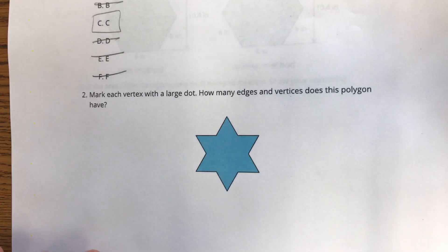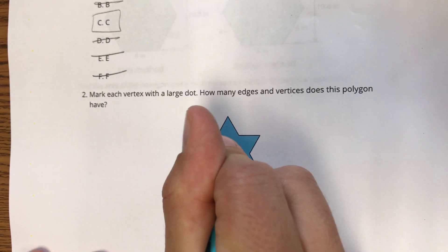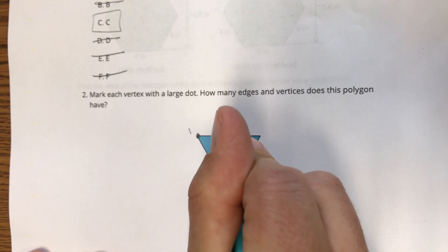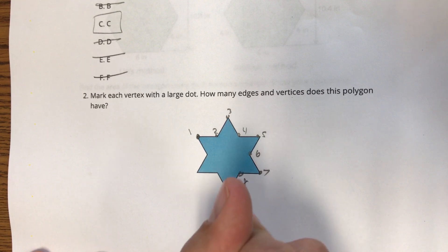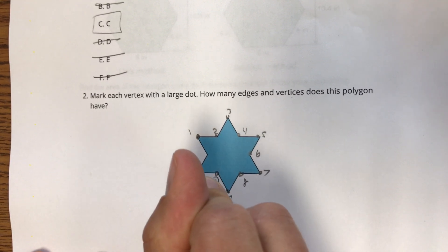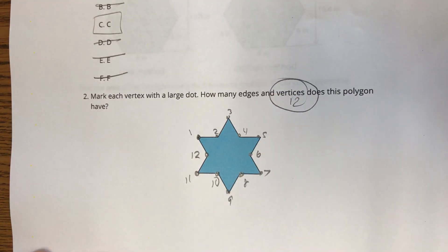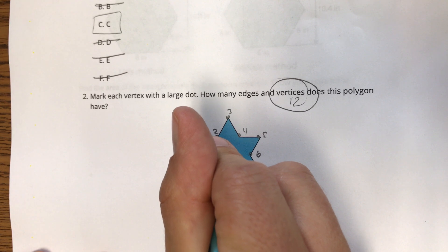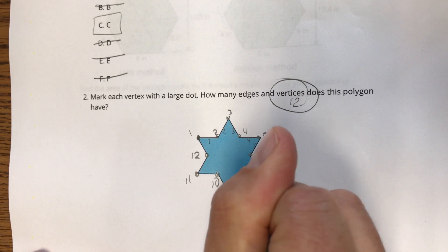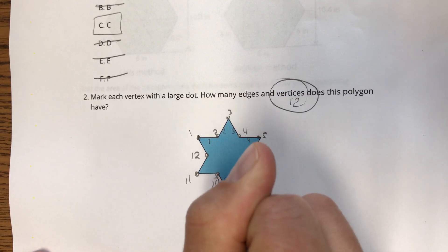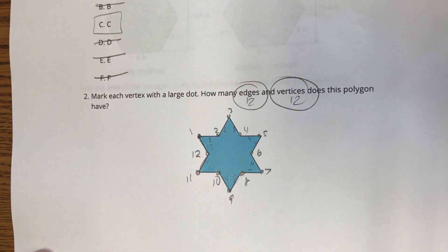Question 2: mark each vertex with a large dot. I'm going to count these while we go: 1, 2, 3, 4, 5, 6, 7, 8, 9, 10, 11, 12. Counting again to confirm — 12 edges, 12 vertices.